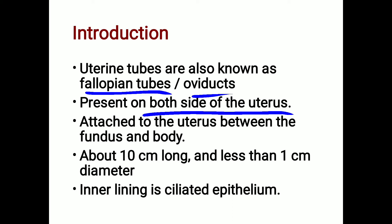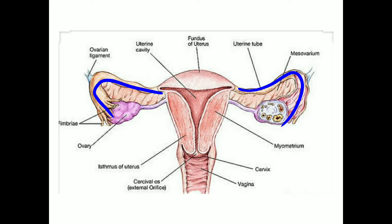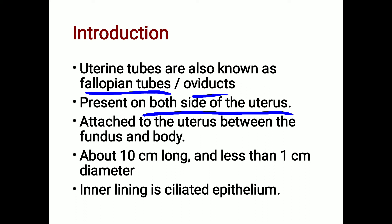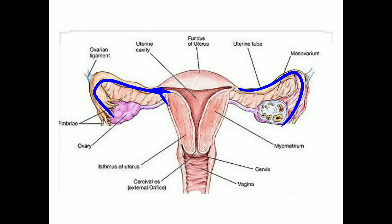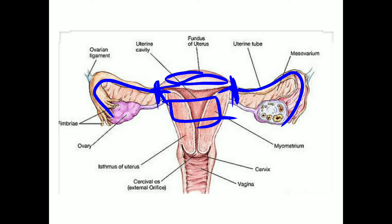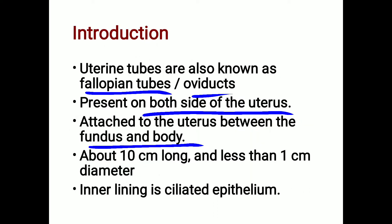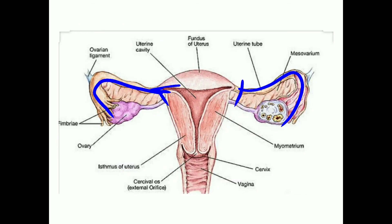The tubes are present on both sides of the uterus and are attached to the uterus between the fundus and the body. The fundus is the dome-shaped upper part of the uterus, and the middle part is its body. The uterine tube is about 10 centimeters long.